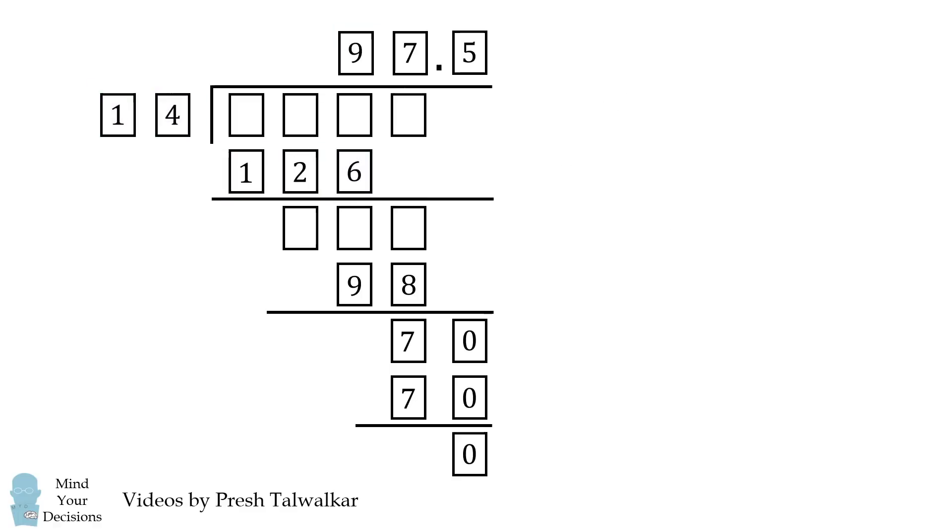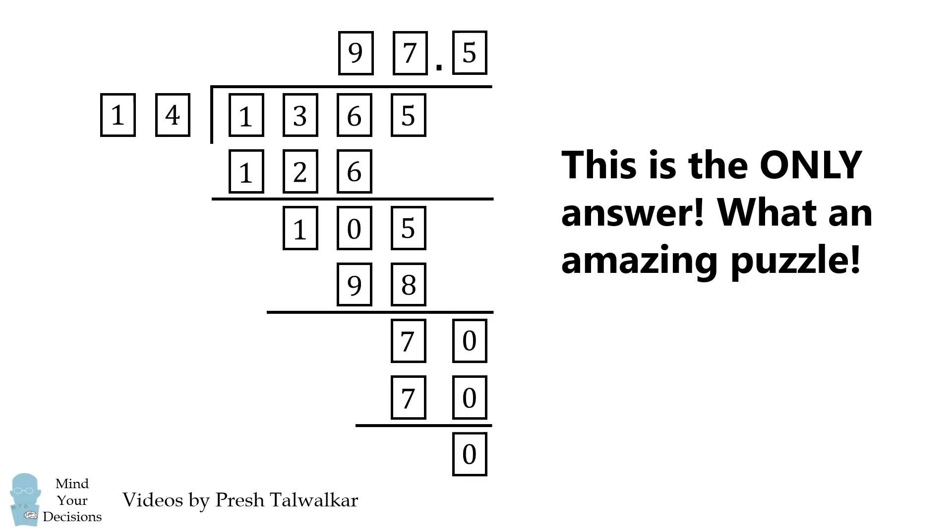We can then go to the final step and solve for the remaining blank spaces. We can first recover the original number. 14 times 97.5 equals 1365. So those are the original 4 digits. To get the final 3 digits, we subtract 126 from 136 to get 10. We then carry down the 5, and we've filled the remaining blank spot. That's the answer to this puzzle. And it's the only answer. What an amazing problem.